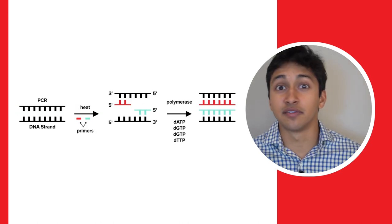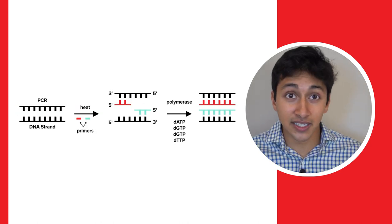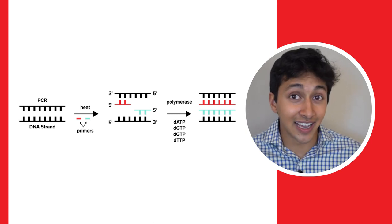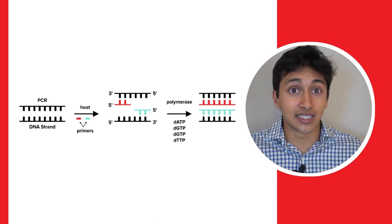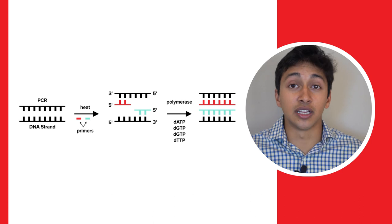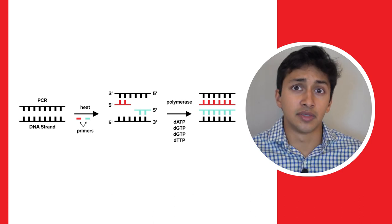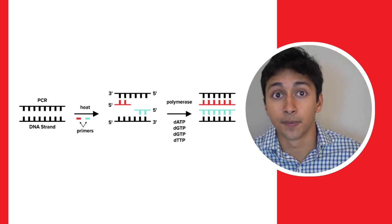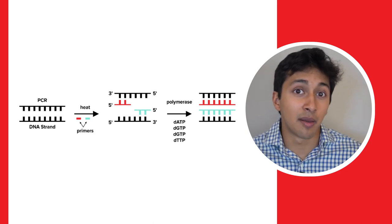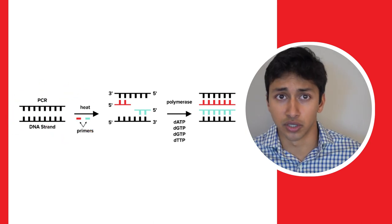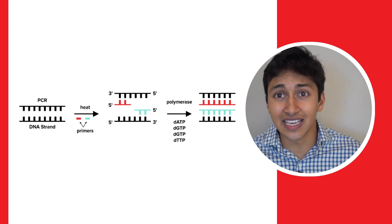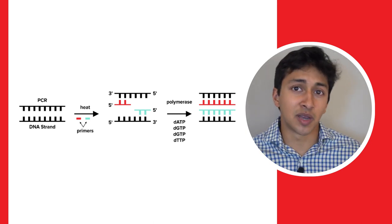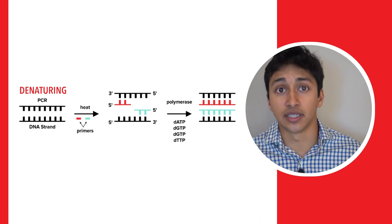Suppose we have a strand of DNA that needs to be duplicated in a PCR environment. The first step in duplicating DNA is to untwist the double helix and separate the two strands. In the cell, the enzymes helicase and DNA topoisomerase took care of that. In PCR, we can do this by applying a little bit of heat or temperature. This process of adding heat to split the DNA into two strands is known as denaturing.